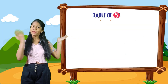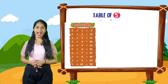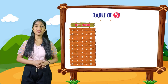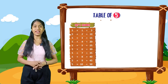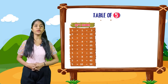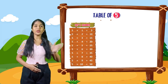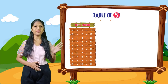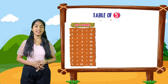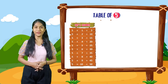So kids, now we will do the table of 5. Let's learn. 5 into 1 is equal to 5. 5 into 2 is equal to 10. 5 into 3 is equal to 15. 5 into 4 is equal to 20. 5 into 5 is equal to 25. 5 into 6 is equal to 30. 5 into 7 is equal to 35. 5 into 8 is equal to 40. 5 into 9 is equal to 45. 5 into 10 is equal to 50.